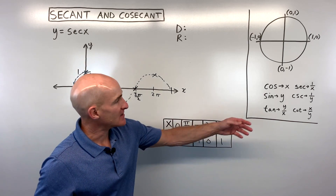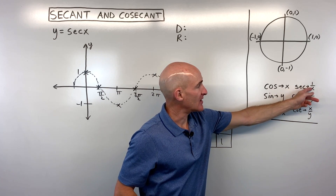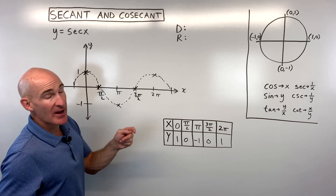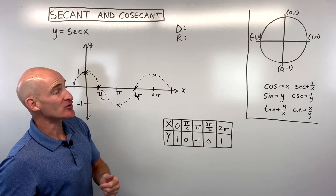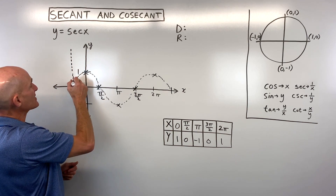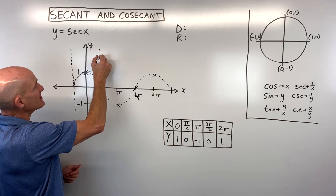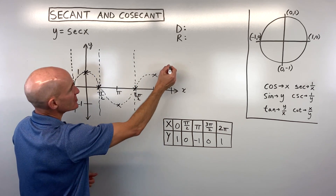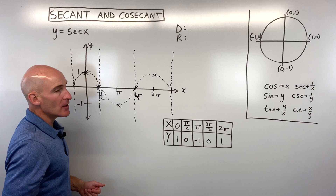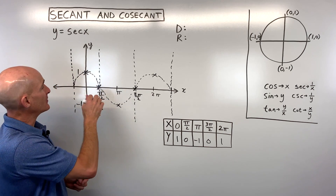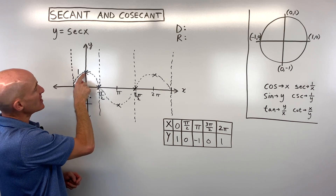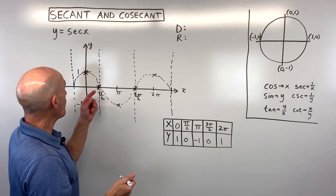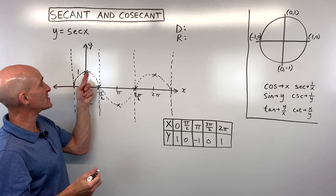Remember that secant is the reciprocal of cosine, or 1 over x. Wherever cosine equals 0, we get 1 divided by 0, which is undefined — so we get a vertical asymptote wherever the cosine graph crosses the x-axis. I'm drawing dashed lines for those vertical asymptotes. The other key points are the turning points or bends in the cosine graph. Where cosine equals 1, 1 divided by 1 is still 1, so the secant and cosine graphs coincide at that point.